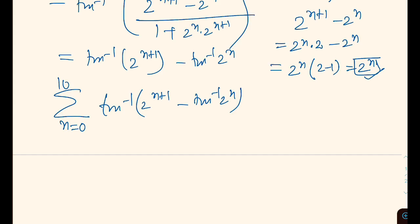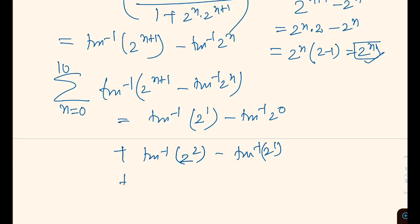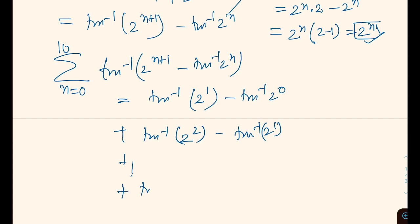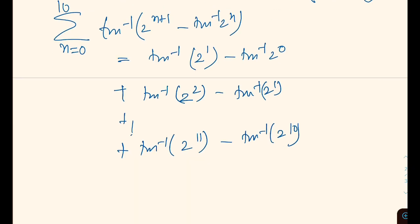Let us say we have the first term of this. If we expand this, we will get tan inverse 2 to the power 1 minus tan inverse 2 to the power 0. The next term for N equals 1 is 2 raised to the power 2 minus tan inverse 2 raised to the power 1, and so on, till the last term we will get tan inverse 2 raised to the power 11 minus tan inverse 2 to the power 10.